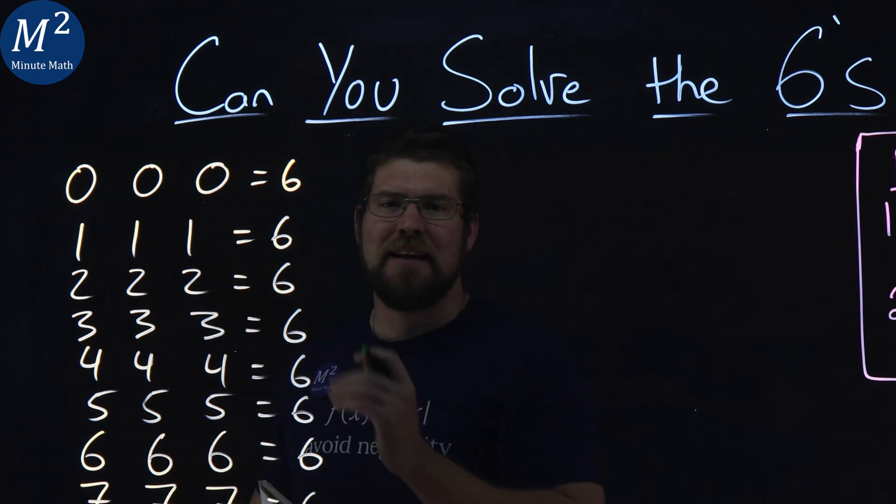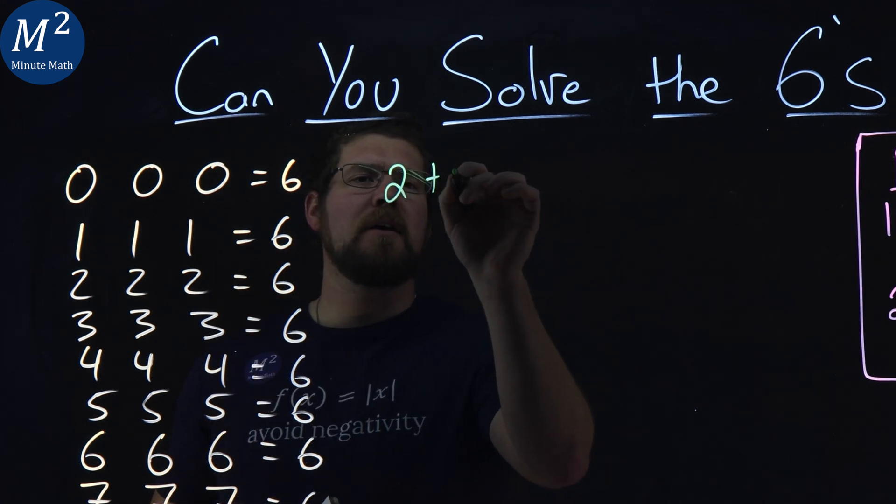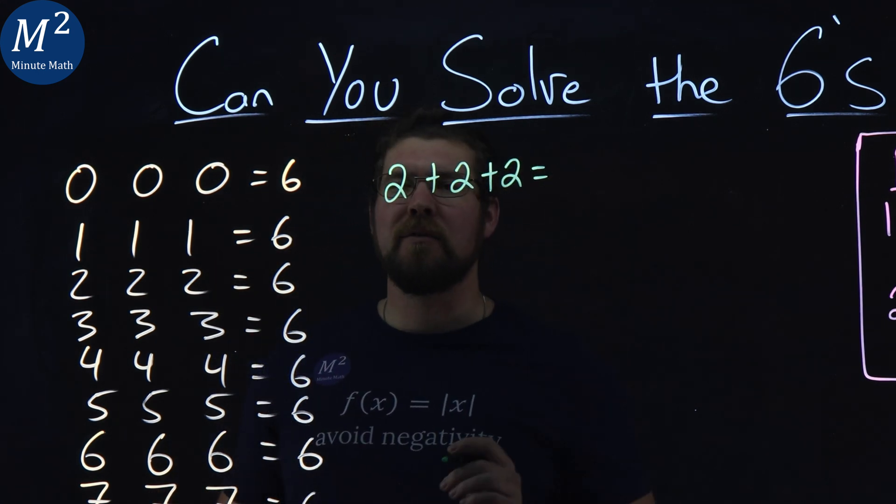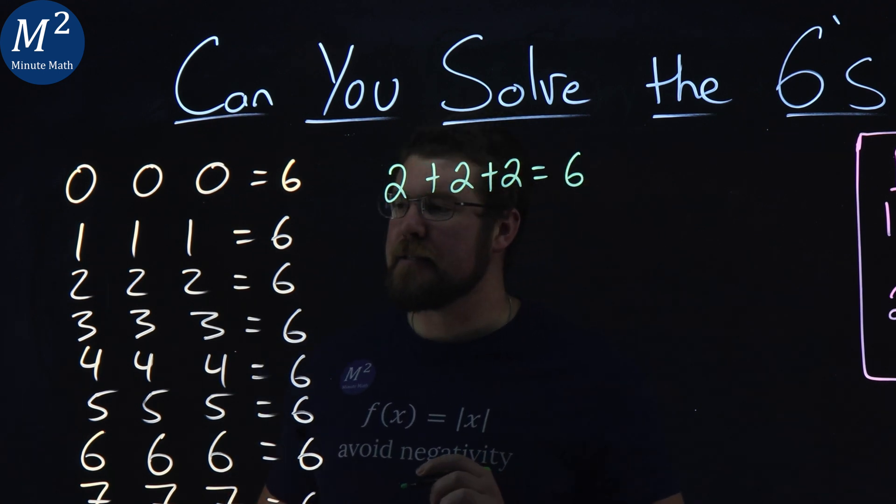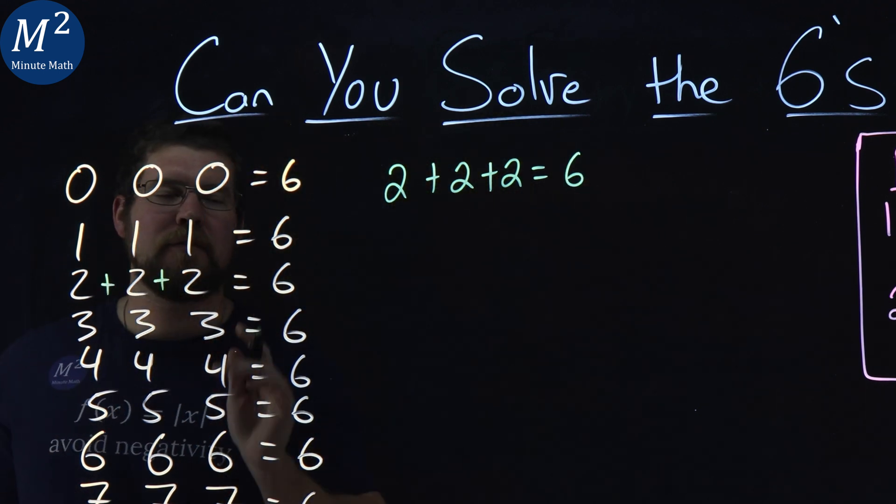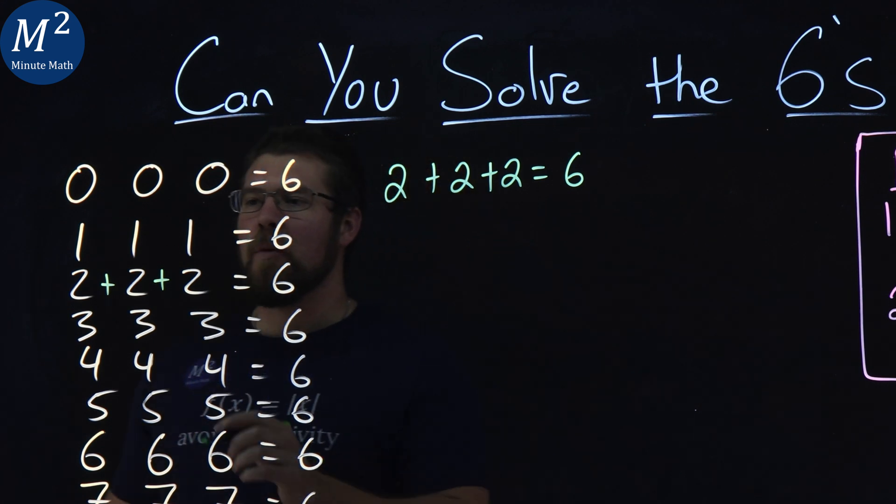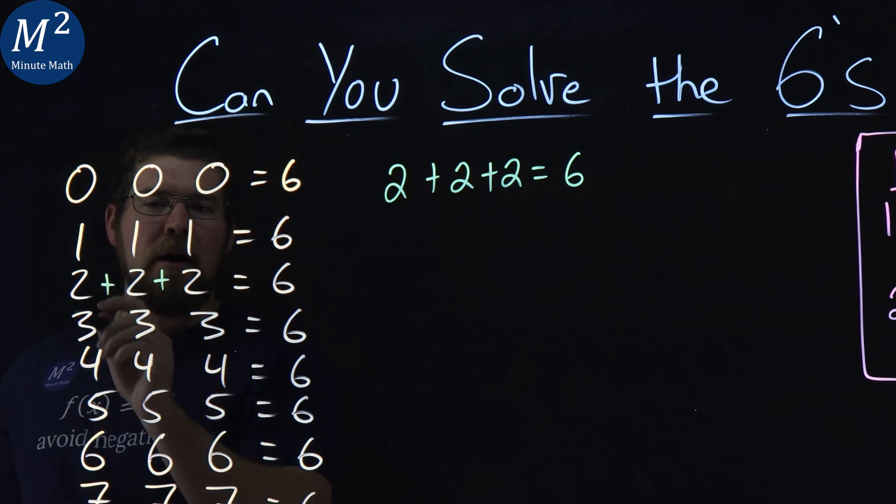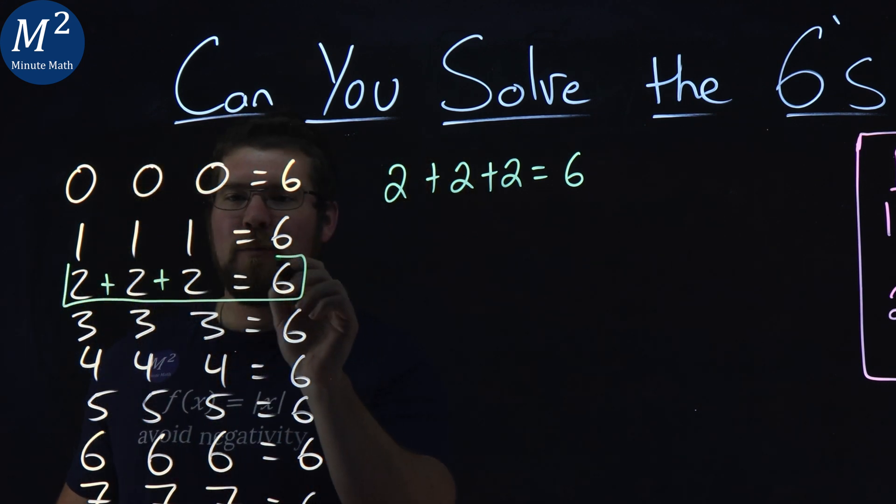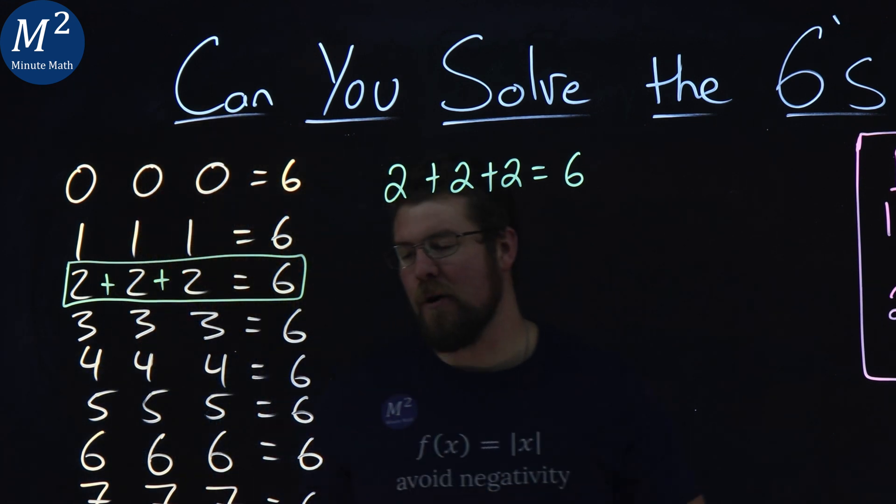First one's pretty easy, the twos. Two plus two plus two equals the good old six. So we put that here. Plus, plus. Got that one covered.